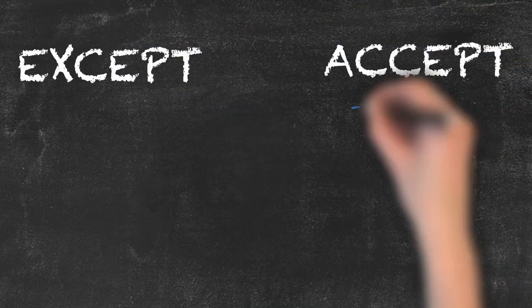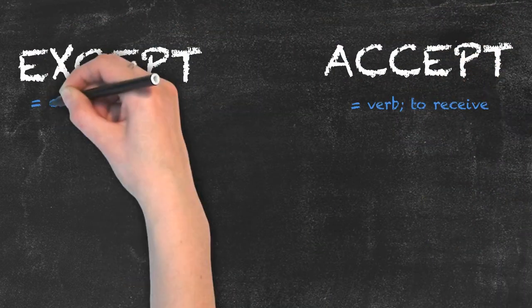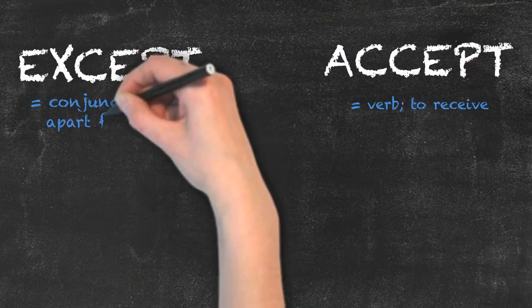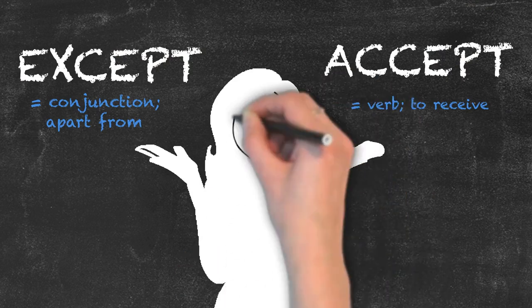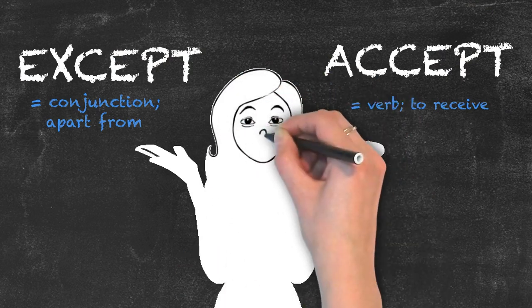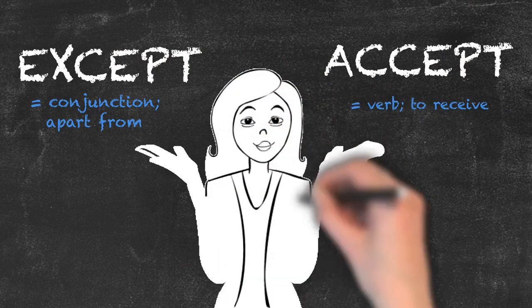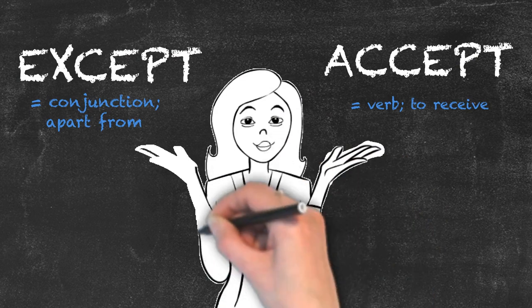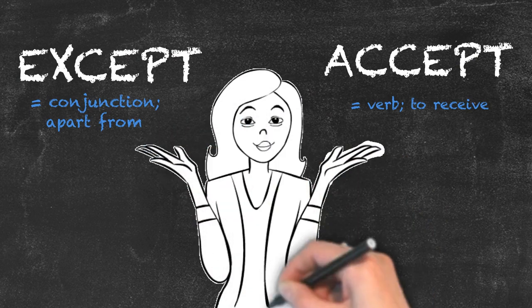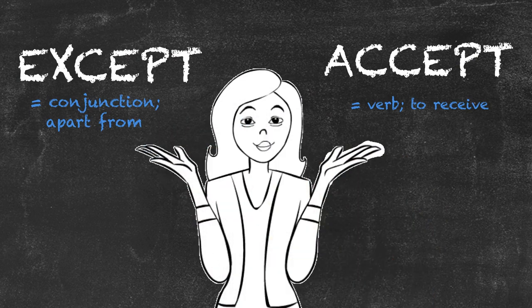Remember that accept is a verb meaning 'to receive,' and except is a conjunction meaning 'apart from.' I'm sure you'll never confuse the two words again. That's it for today — see you next time.